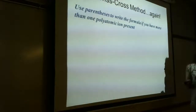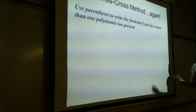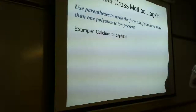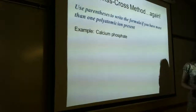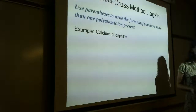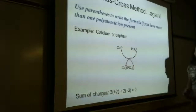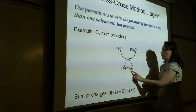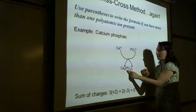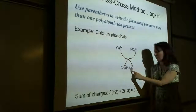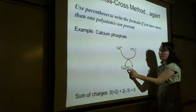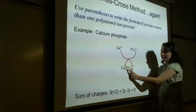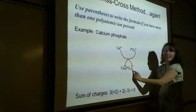For calcium phosphate: calcium is Ca²⁺ and phosphate is PO₄³⁻. When you crisscross them, you get Ca₃(PO₄)₂. You must put parentheses around the polyatomic ion when the subscript is greater than one — otherwise writing PO₄₂ would be read as one phosphorus with 42 oxygens, which is nonsense. Parentheses tell the reader you have two complete phosphate groups.